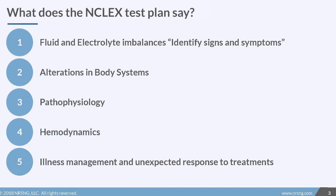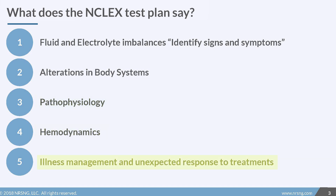What exactly does the test plan say about this specific category on the NCLEX? The first thing is fluid and electrolyte imbalances, which we covered in Part 1 of Physiological Adaptation. The other four are Alterations in Body Systems, Pathophysiology, Hemodynamics, and Illness Management and Unexpected Response to Treatments. Today, we're going to focus on the second biggest portion of the section called Alterations in Body Systems.